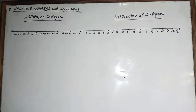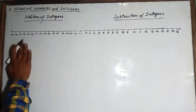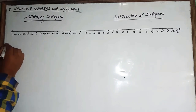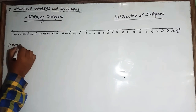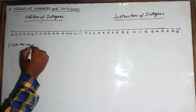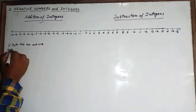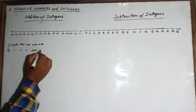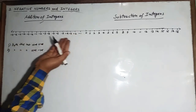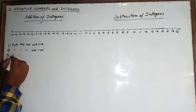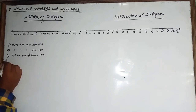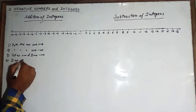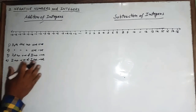Hello students, in this video we are going to learn about addition and subtraction of integers. We will start with addition of integers. There can be four cases: first, both numbers are positive; second, both numbers are negative; third, the first number is positive and second number is negative; and fourth, the second number is positive and first number is negative.